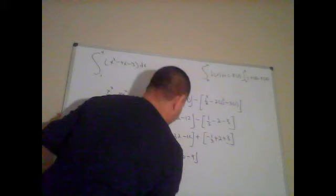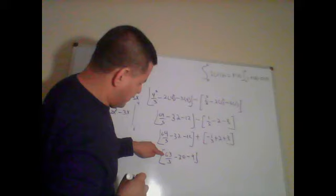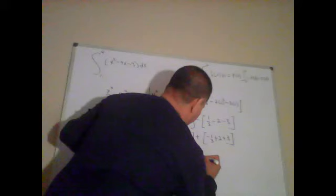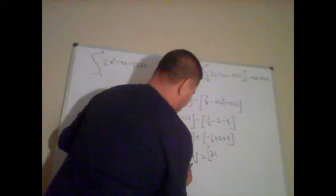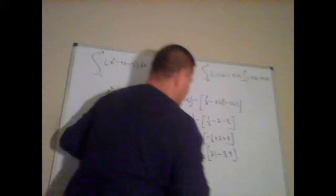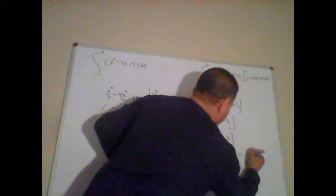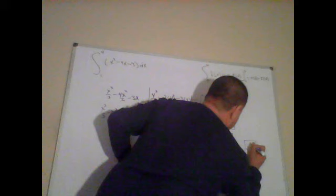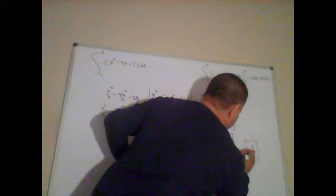Now, 63 divided by 3 is 21. Negative 30 plus negative 9 is negative 39. Then, I add those numbers. 21 minus 39. That give me negative 18.